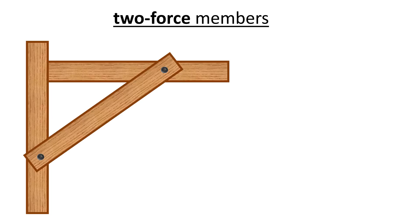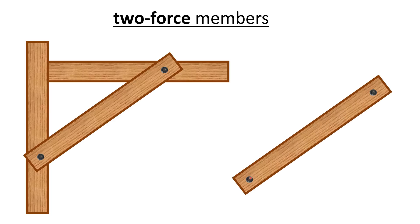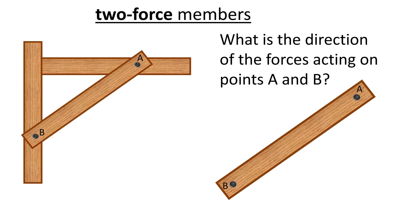Two-force members. Looking at this frame, can you see which piece of it is a two-force member? It's going to be this guy right here. There's a nail over here and a nail over here. We want to draw a free body diagram of this chunk that is the two-force member and see a couple different tricks about it. If you were going to ask what direction are the forces acting on points A and B, we're going to draw a free body diagram — this nail is pushing and pulling on this board. There's actually a very specific answer, and the answer is there because it is a two-force member.